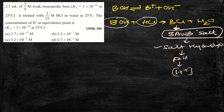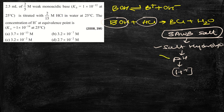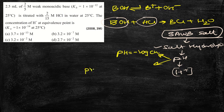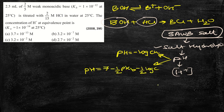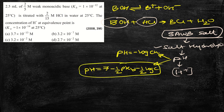Now, for finding pH using salt hydrolysis, there are two formulas. One formula is: pH = −log(C·h). The second formula is: pH = 7 − ½·pKb − ½·log(C). The problem is whether we can apply the second formula here or not.